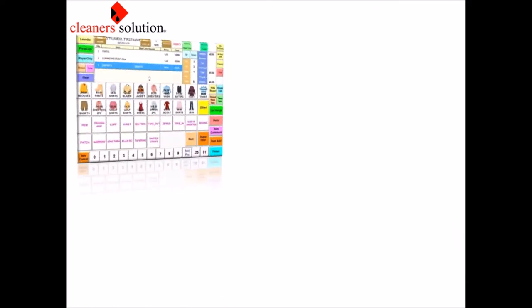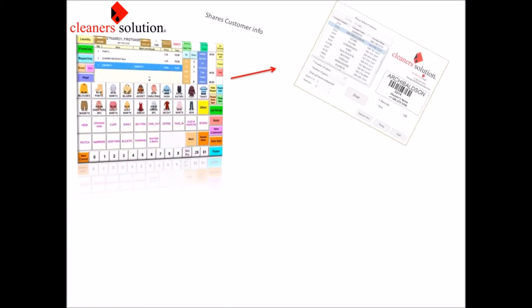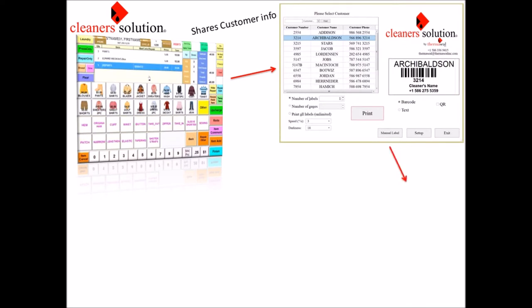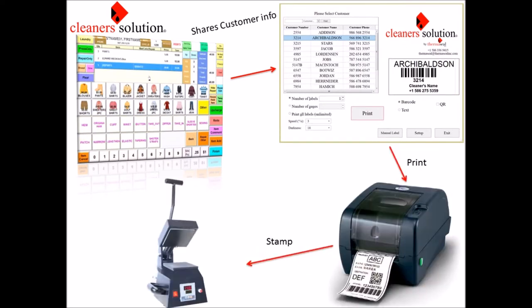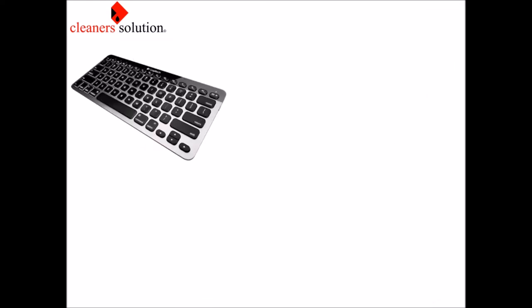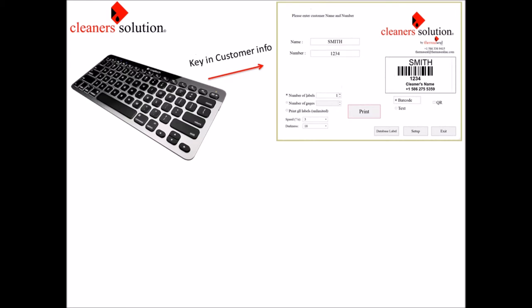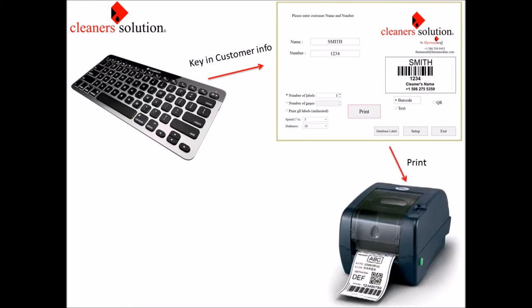Your current point of sale software provides the name and number of your customers to the Cleaner Solution application, then labels are printed and finally stamped. You can also print labels manually. For that, you key in your customer's information into the application, then labels are printed and finally stamped.